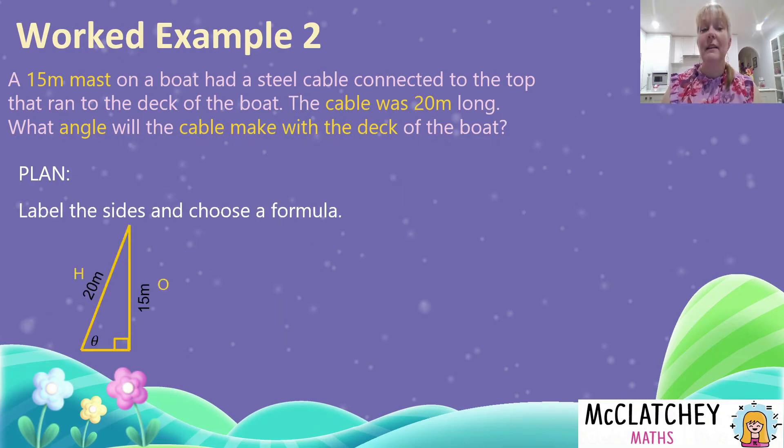Now I'm going to label my sides in relation to the unknown angle. The opposite side is 15 meters. The hypotenuse is 20 meters. And now I need to choose a formula. I've got an O. I've got an H.